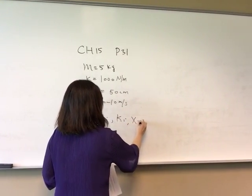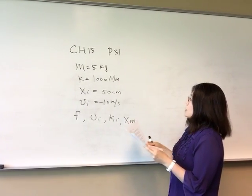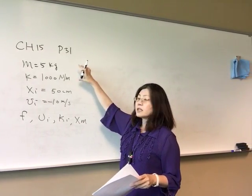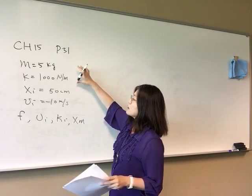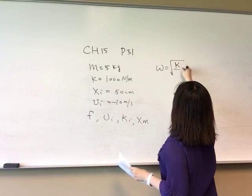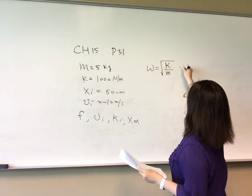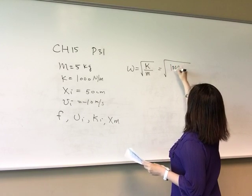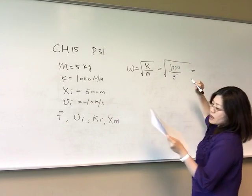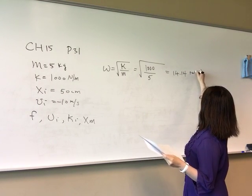This is very similar to problems we did earlier. We have mass and spring constant, so we can calculate angular frequency because omega equals the square root of k over m. With k equal to 1000 and m equal to 5, after calculation, omega is 14.14 radians per second.